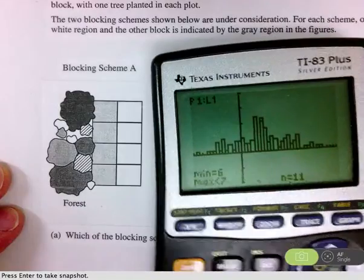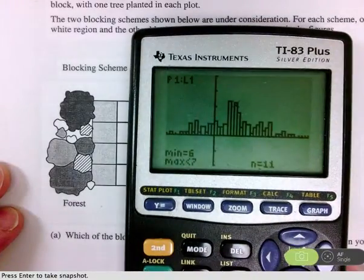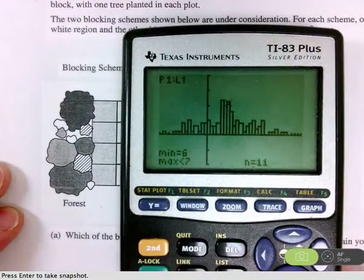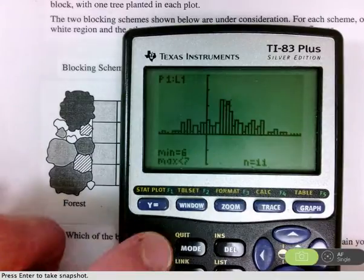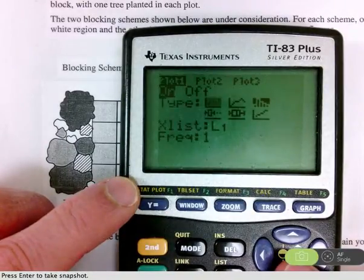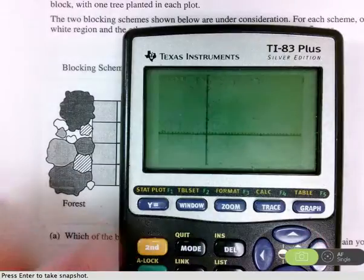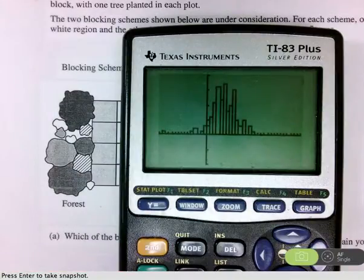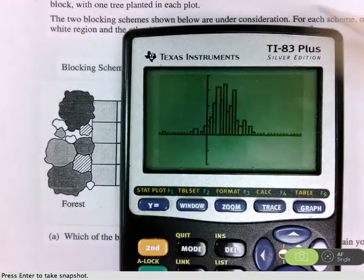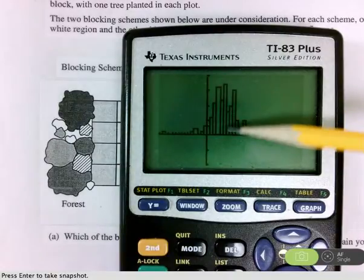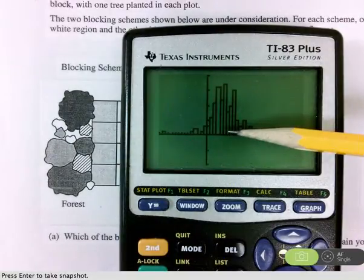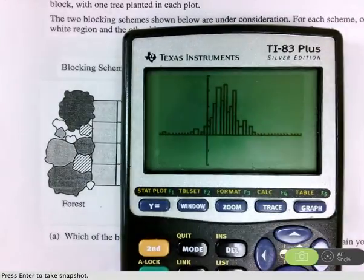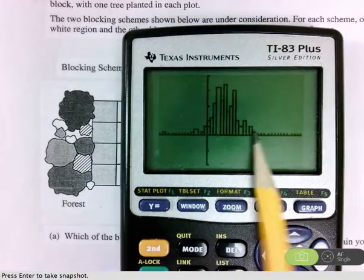Notice what happens, though, when we look at the sample differences that we got from blocking scheme A. Something very distinct happens. Take a look. This time, again, the truth is still six. The truth is still here in the middle. But notice, these sample differences are much more tightly packed together.